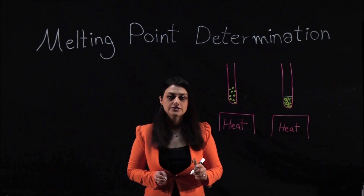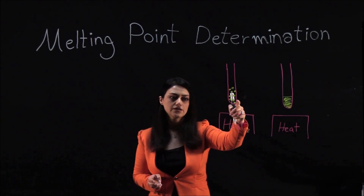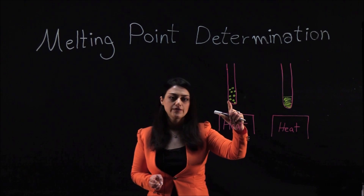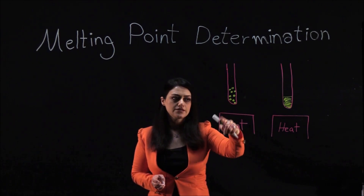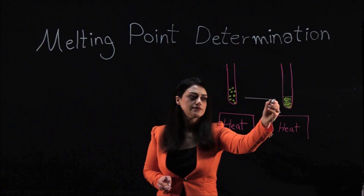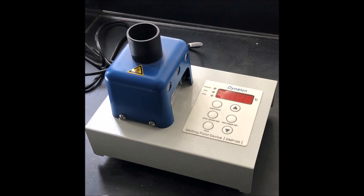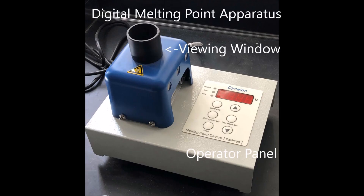Melting point is performed by adding a tiny amount of solid compound into a small capillary tube and then slowly heating the compound until it melts. In our lab, we use a specially designed digital melting point apparatus that heats the compound slowly and accurately. The instrument has a magnified viewing window that we can use to observe the compound as it changes. You can change the temperature settings using the operator panel.